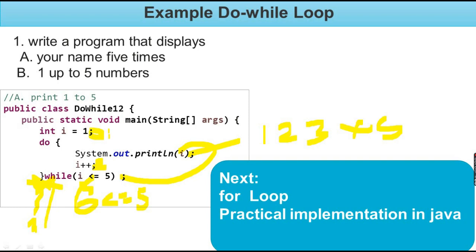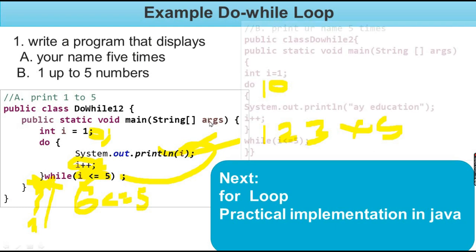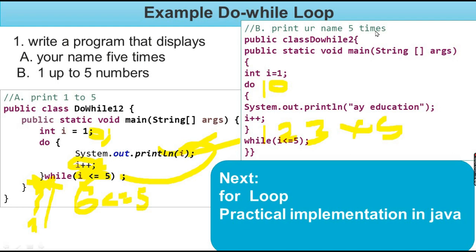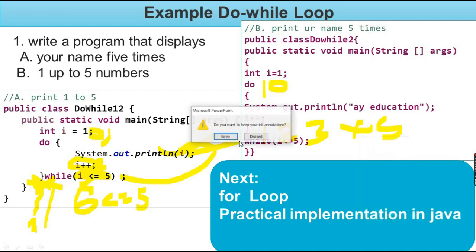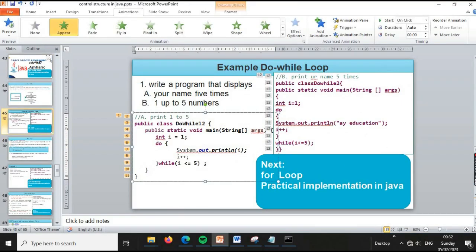int i is equal to 1. We have to do System.out.println(i). You can print 5 times using this loop. You can copy and use this practical implementation.